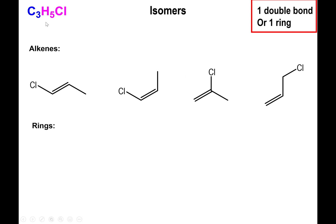For rings: halogens can only form one bond, so they cannot be part of the ring structure — they can be attached to a ring but not within it. With only three carbons, the only ring possible is a three-membered ring. We draw the cyclopropane ring and attach the chlorine to one corner. It doesn't matter which corner, because rotating the molecule gives the same compound.